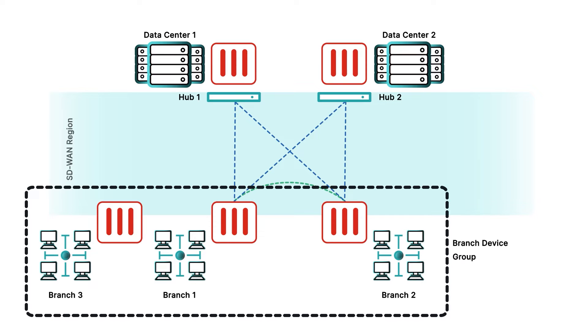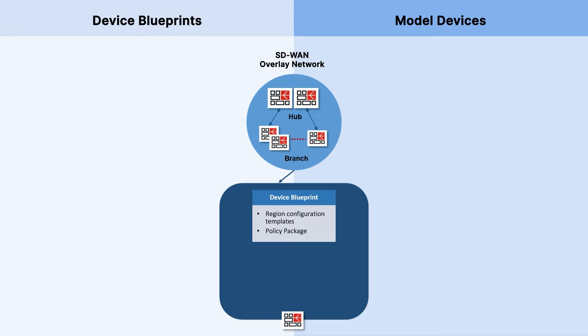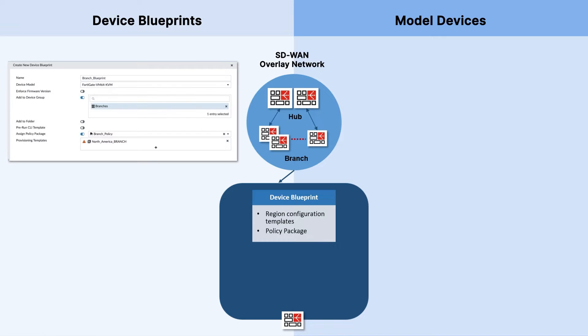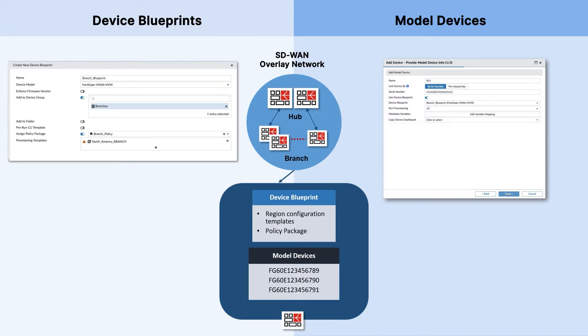We first need to take a step back and look at two key features found in FortiManager 7.2 and newer: device blueprints and model devices. A device blueprint ties in all the necessary templates and policy packages for easy provisioning of new devices, while model devices are objects that represent pre-authorized FortiGates which have yet to come online. Using these two features, we can easily and repeatedly onboard new FortiGates to our SD-WAN.